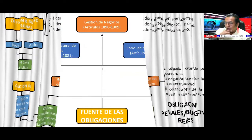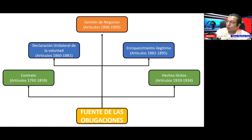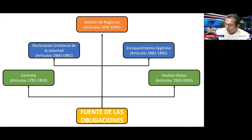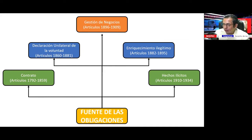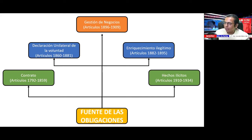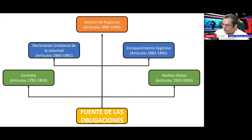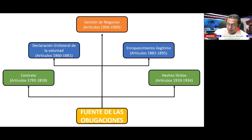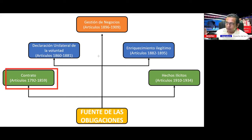La fuente de las obligaciones: el lugar donde brota, donde emana, donde surge la obligación. El fundamento viene del Código Civil de la Ciudad de México, aunque los códigos civiles de las entidades federativas tienen la misma clasificación. La principal fuente de las obligaciones se llama contrato.